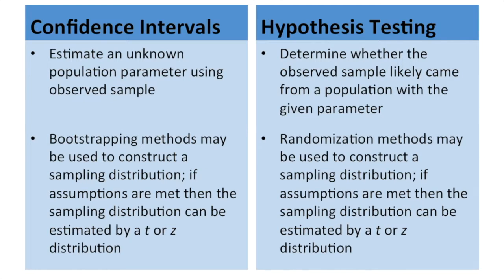Similarly, in hypothesis testing, first we're going to use randomization methods. Randomization methods may be used to construct a sampling distribution. Constructing a sampling distribution using randomization methods is very similar to bootstrapping, only now we have a hypothesized population parameter, so we're going to center our sampling distribution on that hypothesized value. Next week, if assumptions are met, the sampling distribution can again be estimated by a t or z distribution.